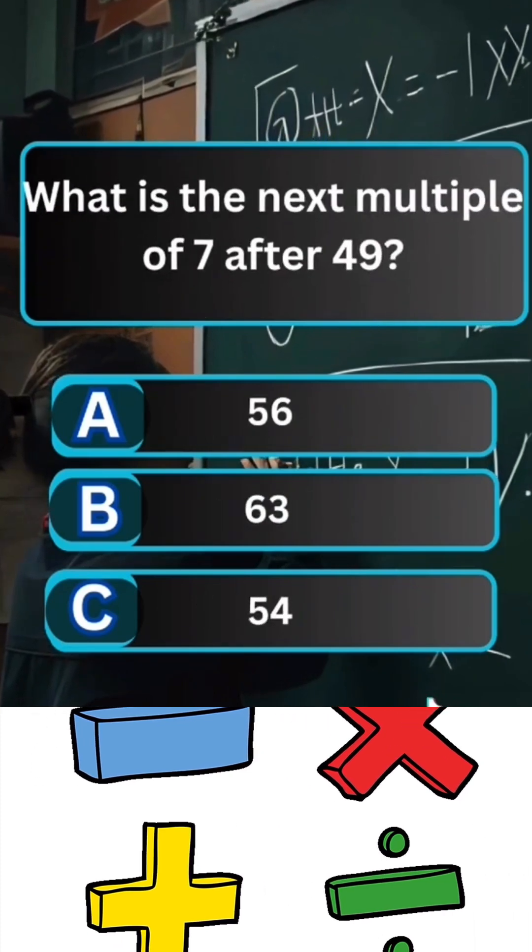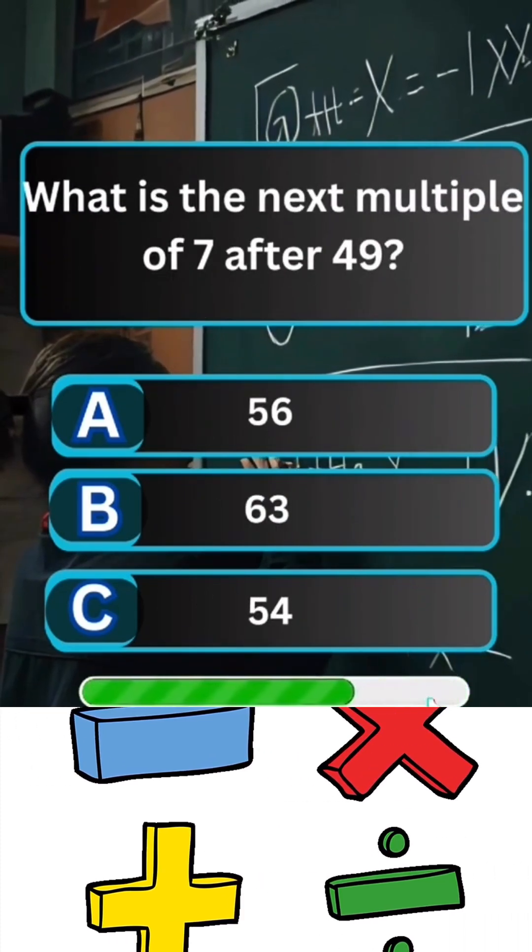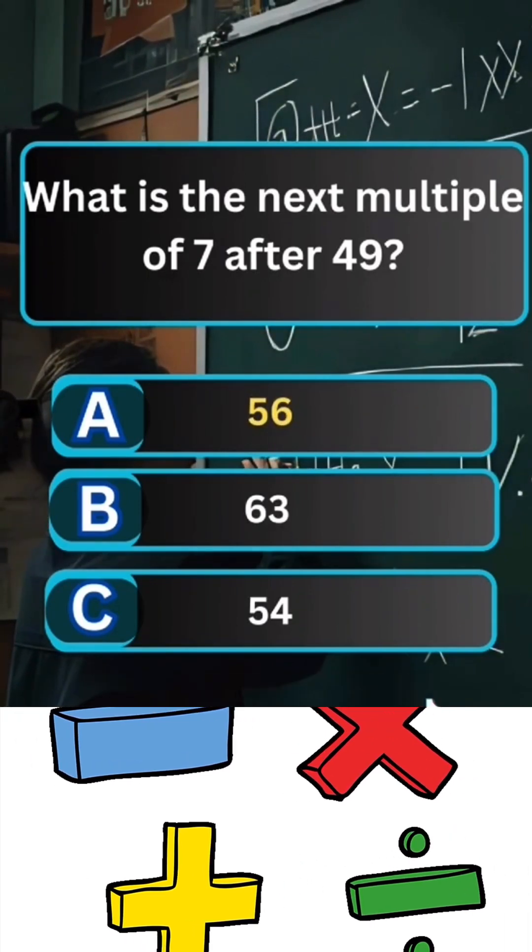Question 3. What is the next multiple of 7 after 49? Answer A. 56.